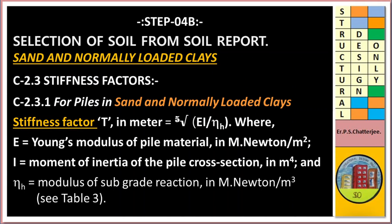Selection of soil from soil report — sand and normally loaded clay. Stiffness factor T (in meters) is equal to the fifth root of EI divided by ηH, where E is the modulus of elasticity of the pile material in MN/m², I is the moment of inertia of the pile cross-section in m⁴, and ηH is the modulus of subgrade reaction in MN/m³.